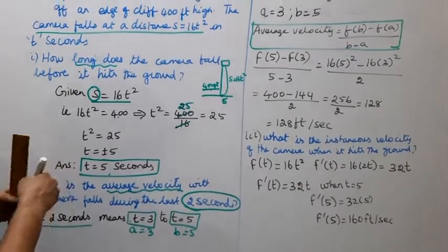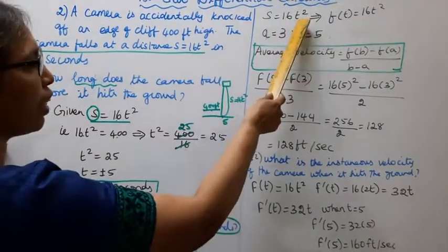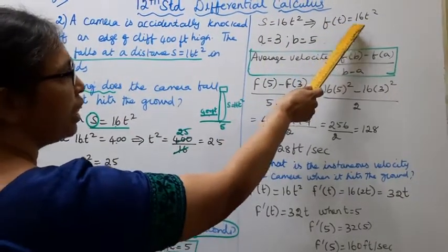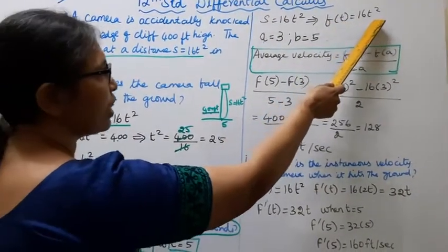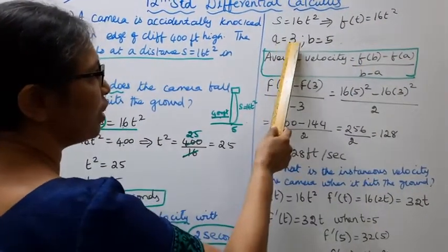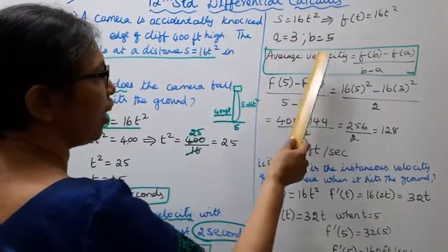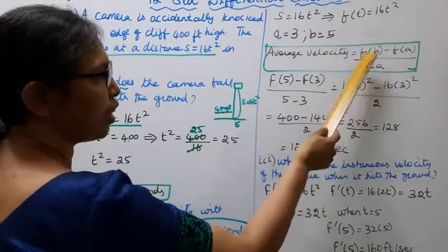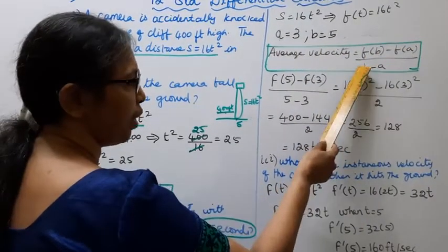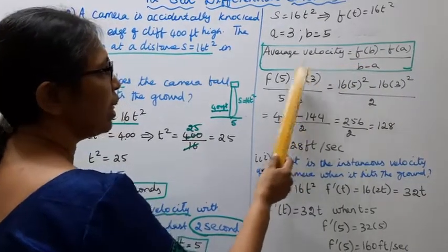Given s equal to 16t squared, so f of t equals 16t squared. The last 2 seconds means from t equals 3 to t equals 5, so a is 3 and b is 5. The average velocity formula is: f(b) minus f(a) divided by b minus a.